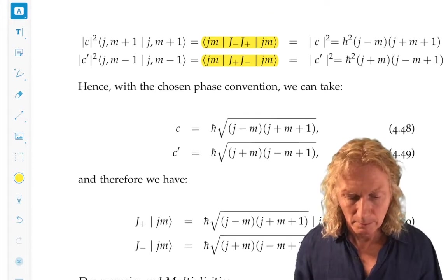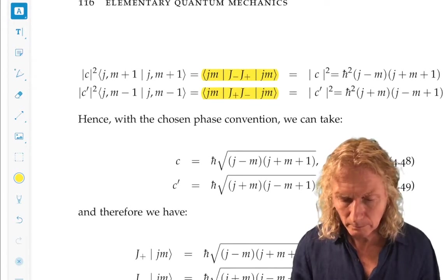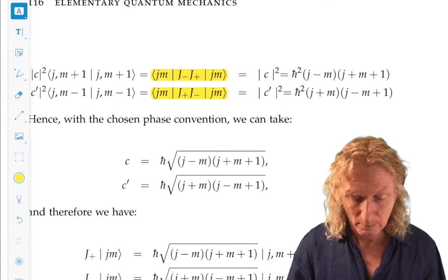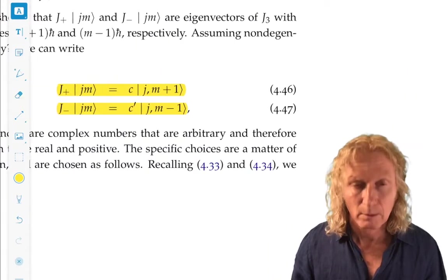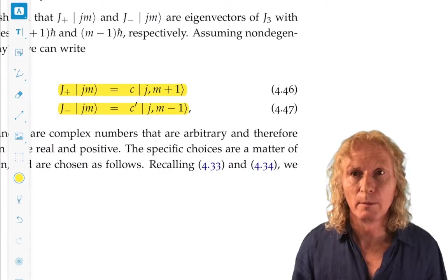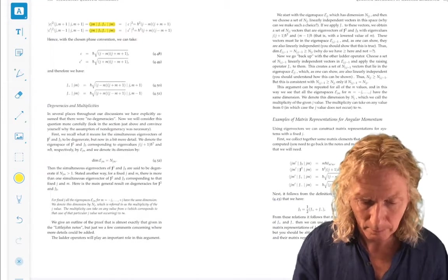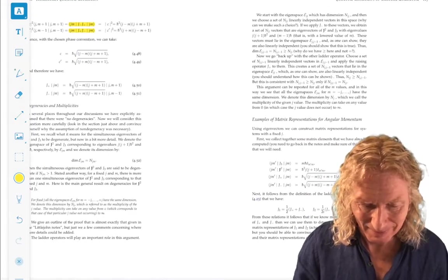But if we plug in J minus and J plus with these constants C and C prime and put it in this relation, this is what we get.